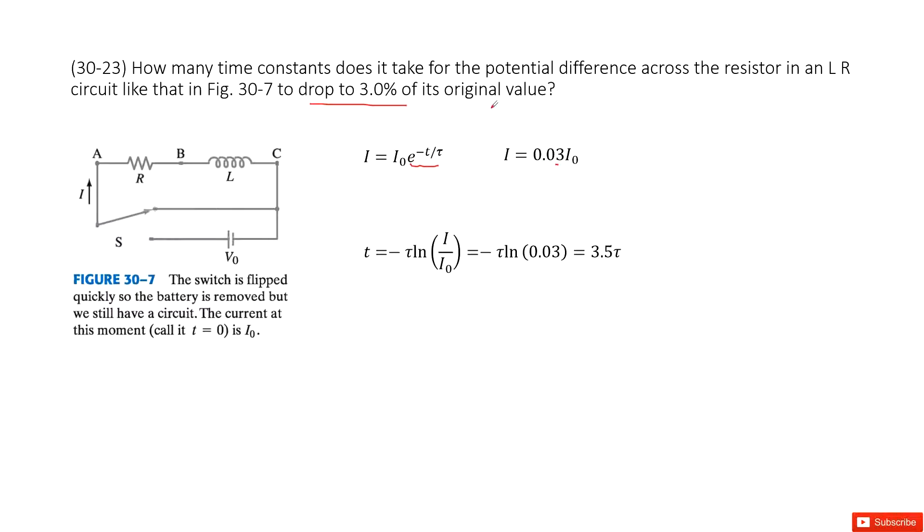It asks you how many time constants we need for this current to drop to 3%. So that means t equals negative tau times ln of I over I naught. This function comes from the original equations.